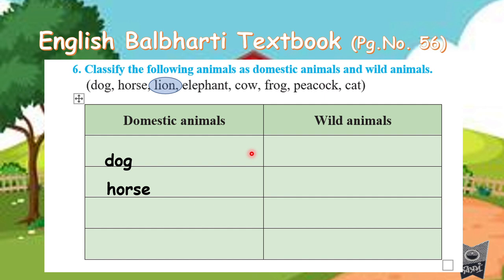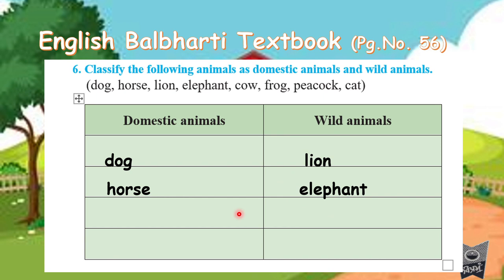No, not at all — it will eat us up! So lion is a wild animal. Next is elephant — do we keep elephant at home? No, it is found in the jungle, so elephant is a wild animal. Next is cow — in the villages we keep cows at home, so cow is also a domestic animal. Next is frog — do we keep frog at home? No.